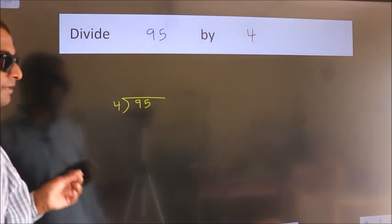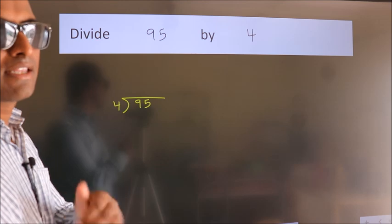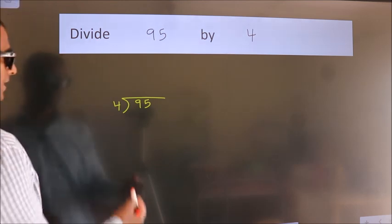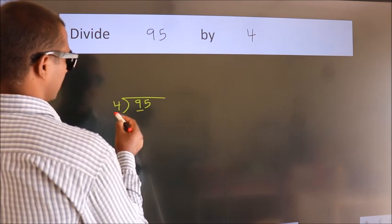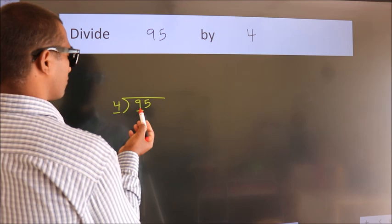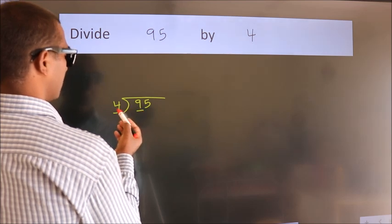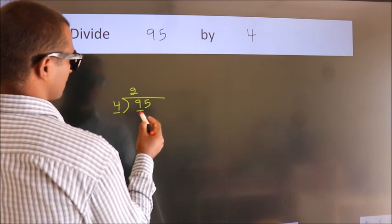This is your step 1. Next, here we have 9, here 4. A number close to 9 in 4 table is 4 twos, 8.